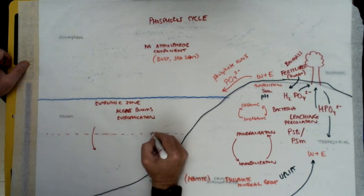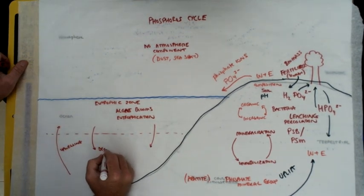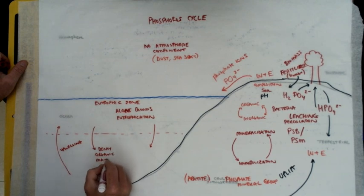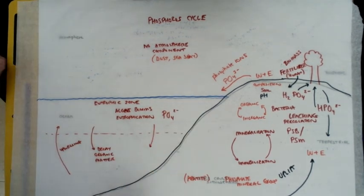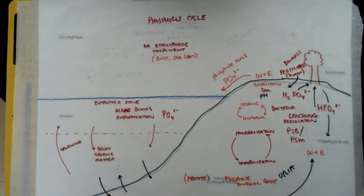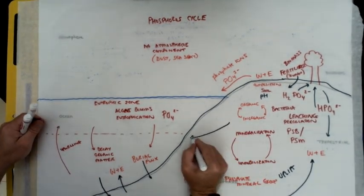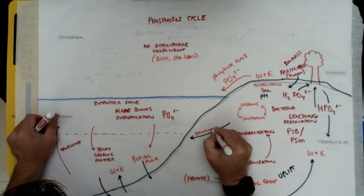So looking at the eutrophic zone right here, looking at the function and mechanism and presence of phytoplankton and the phosphate ion and any kind of dissolved phosphate and also the burial flux, which is very important and weather and erosion.